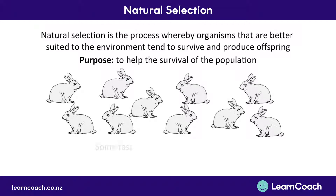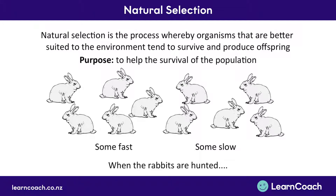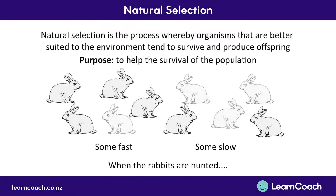Let's look at a population of rabbits. Some of the rabbits, just due to chance, might be fast and some might be slower. If you have a hunter come along and the environment changes, there's some chance in who gets caught and who doesn't, but it's more likely that a greater proportion of the slow rabbits won't survive the hunter compared to the fast rabbits.